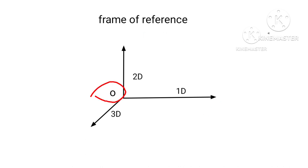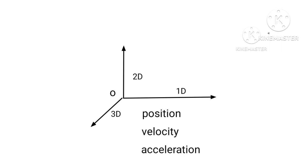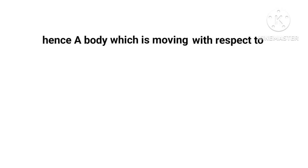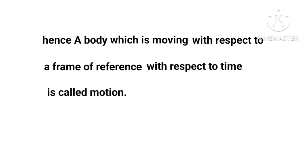This set of geometrical axes is called frame of reference, with fixed point O as point of reference. The position, velocity, acceleration, etc. of a body can be determined within this frame of reference. Hence, a body which is moving with respect to a frame of reference with respect to time is called motion.